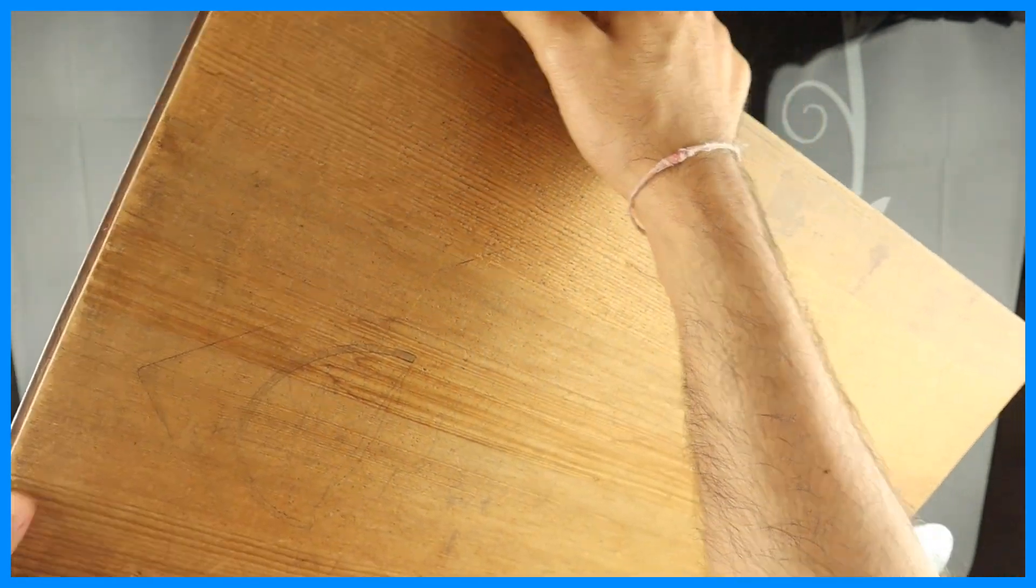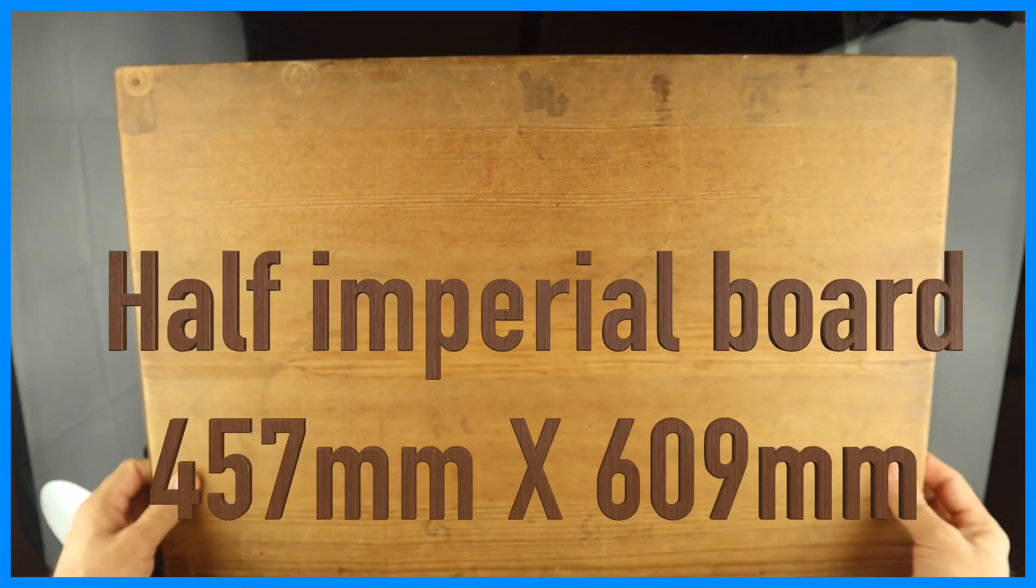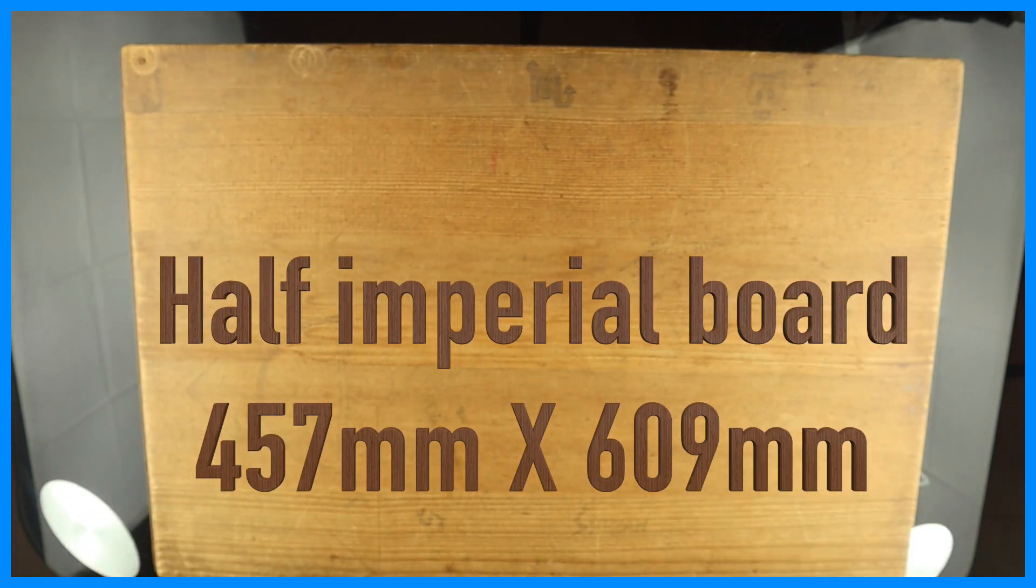See this. On the left hand side there is a working edge. So this is a drawing board which we require. The size of the board is half imperial.